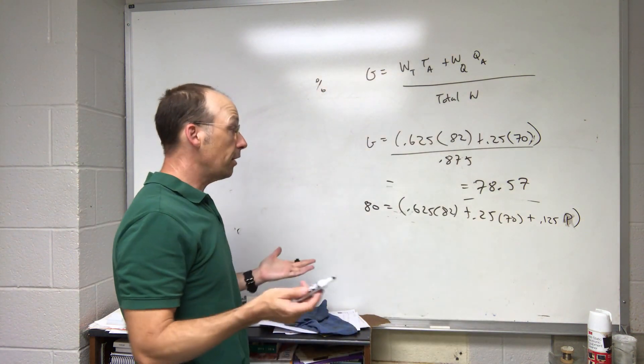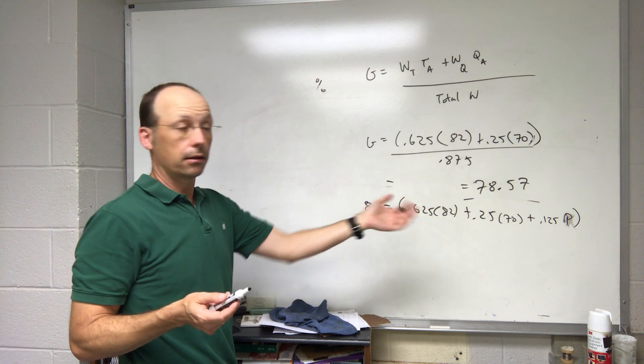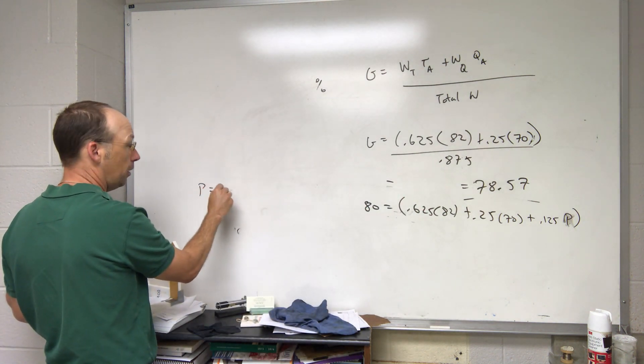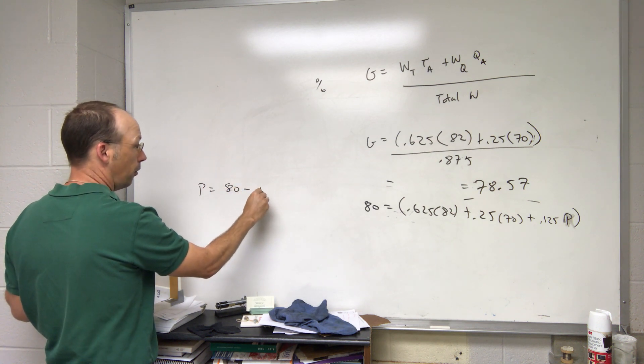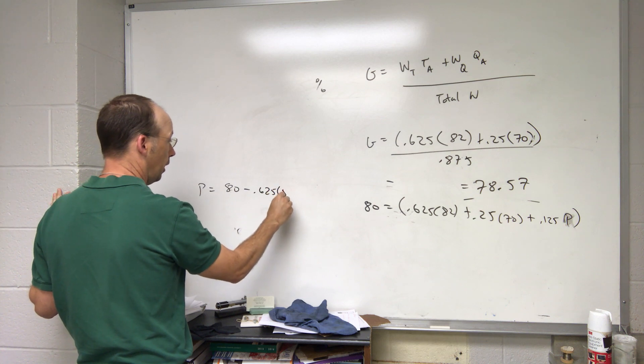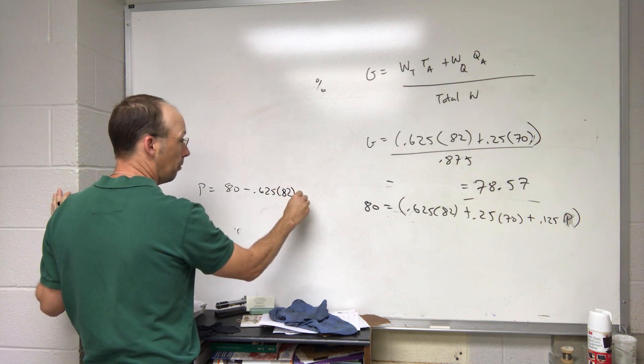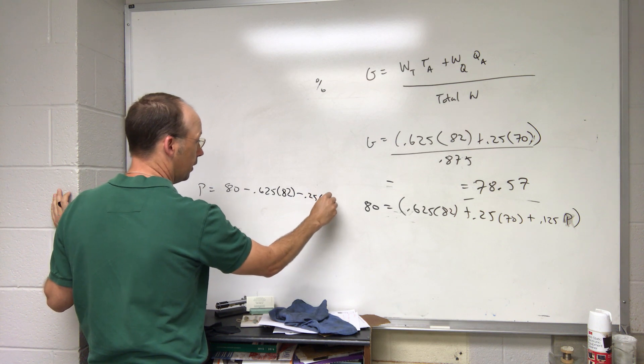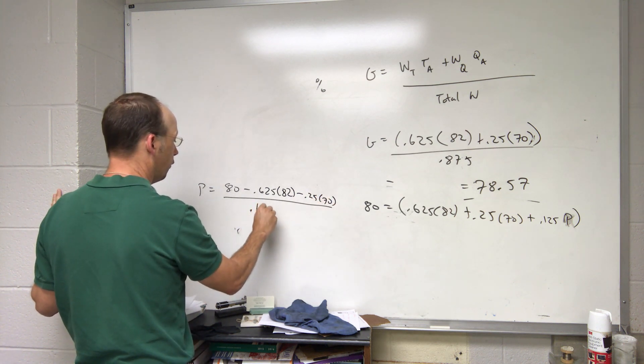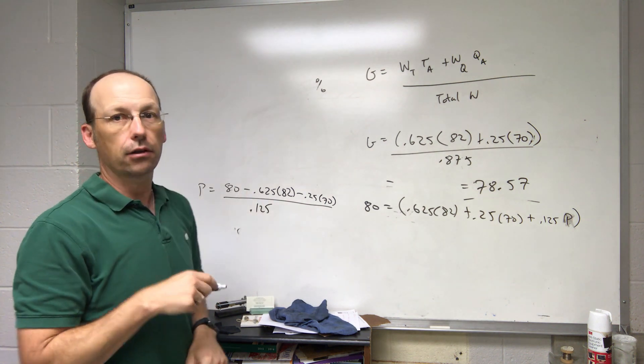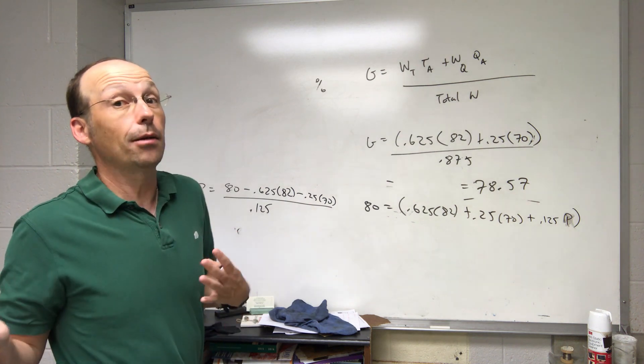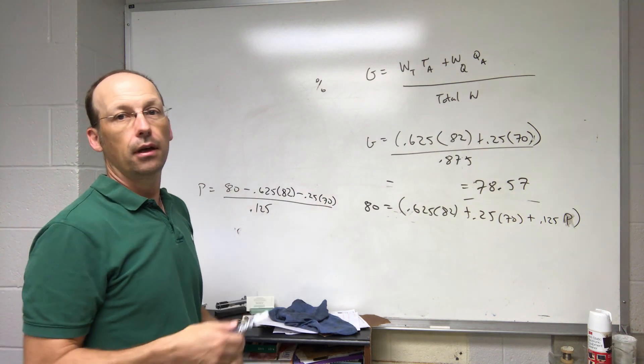So if I do that I get P equals 80 minus 0.625 times 82 minus 0.25 times 70, all that divided by 0.125. Now I'm not going to put that in my calculator. You can do that if you want, but I suspect it might be greater than 100%, which means you can't get a B unless you get bonus points or something like that.